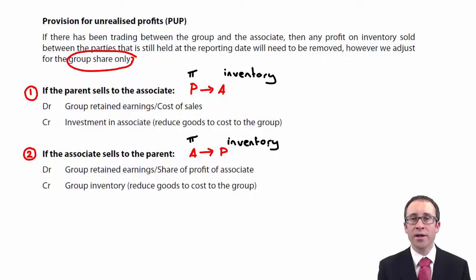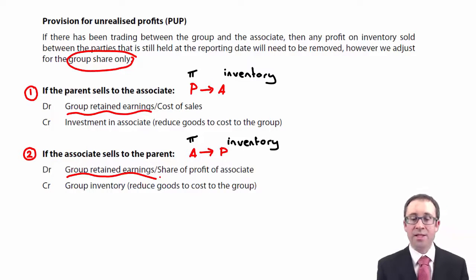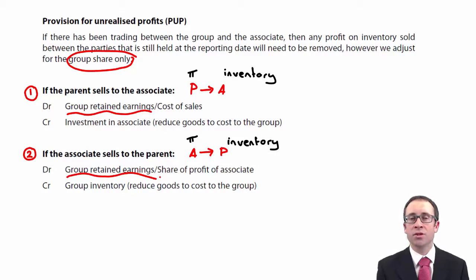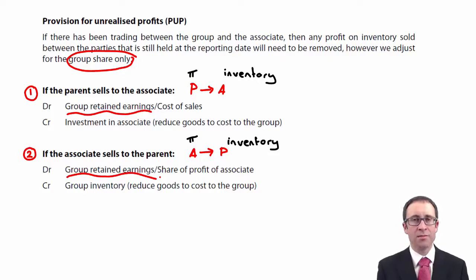In the group SFP, it's the group that has the influence over the sale, so we will debit the group retained earnings. It makes no difference in terms of the direction of the sale on the SFP — we always debit the group retained earnings. However, when looking at what happens in the statement of profit or loss, if the associate has the profit, we can be more specific about where that profit figure is impacted. We are going to debit the associate's profit within our share of profit of associate.